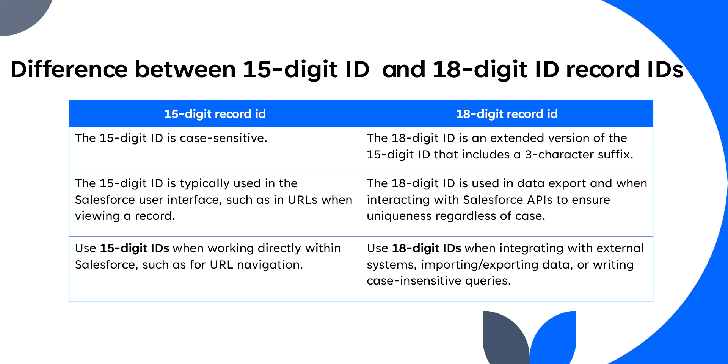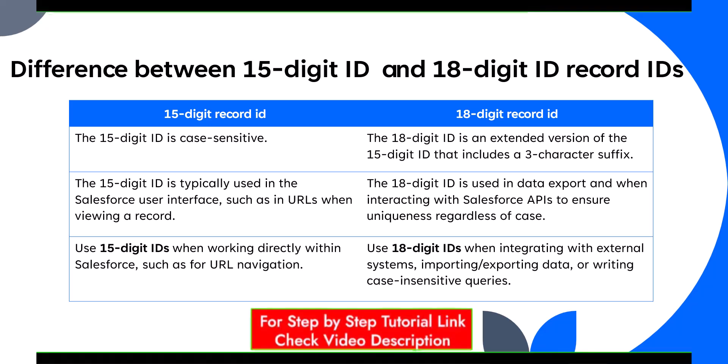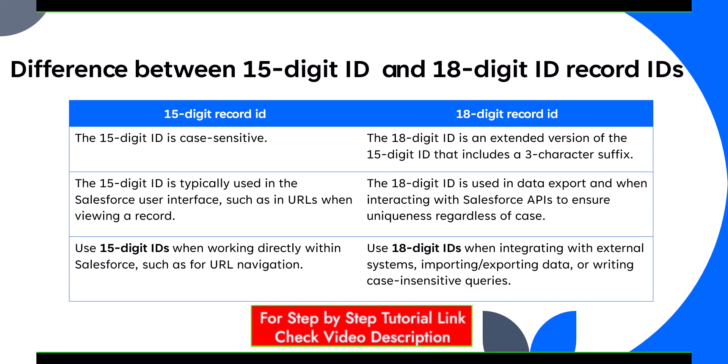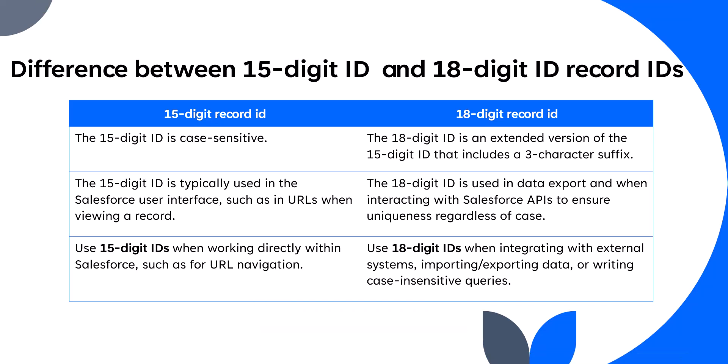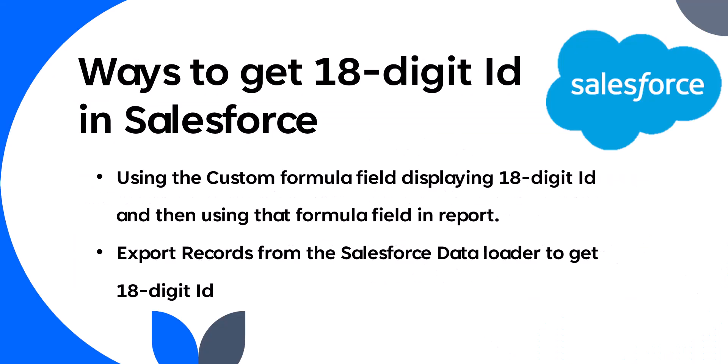By using the 15-digit ID you can also perform data operations — like updating records using tools like the Salesforce Data Import Wizard and the Data Loader tool. But the problem comes when you are integrating with a third-party system or external application; there you need the 18-digit ID to refer to your records in APIs. The 15-digit ID is used when working directly with Salesforce, such as URL navigation, while the 18-digit ID is used when integrating with external systems, importing or exporting data, or writing case-sensitive queries.